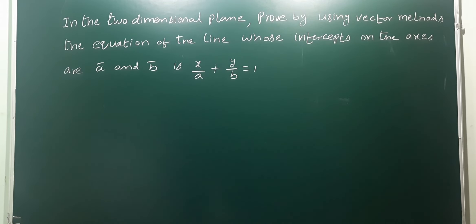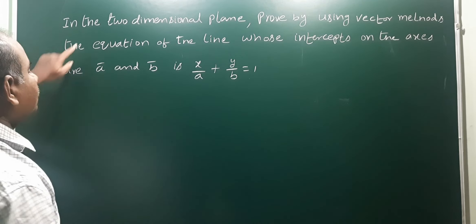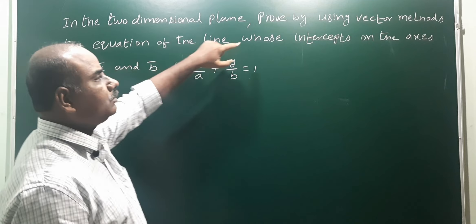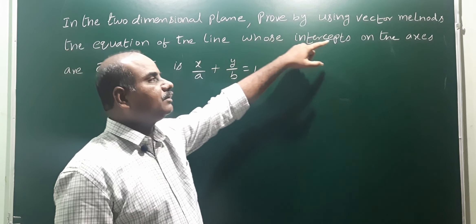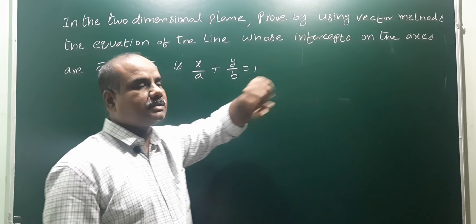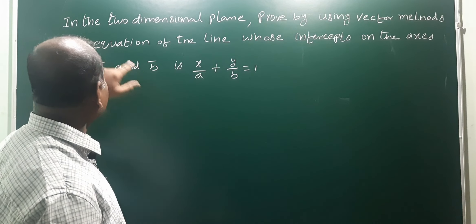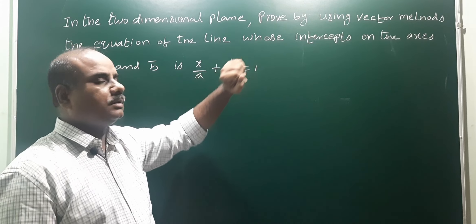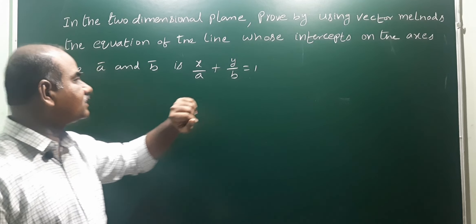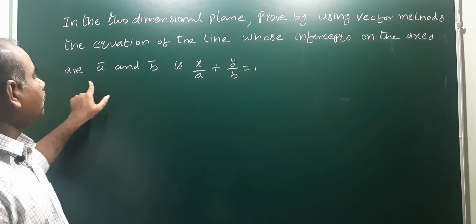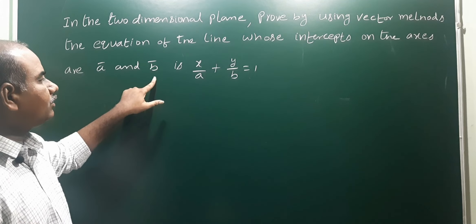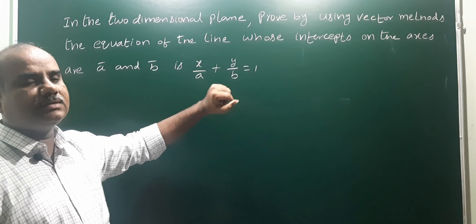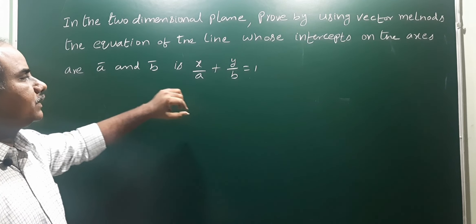Next problem: in the two-dimensional plane, prove by using vector methods the equation of the line whose intercepts on the axes are a and b, that is x/a + y/b = 1.